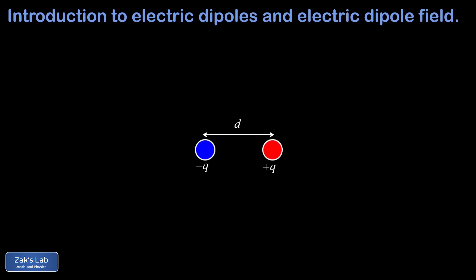An electric dipole is simply a pair of opposite charges with the same magnitude q separated by a distance d. The reason we care about these is that they make a good model for the behavior of any polarized molecule, and these sorts of dipoles are everywhere — water molecules are just one example. The ideal dipole is characterized by its charge magnitude and the separation distance between the charges.